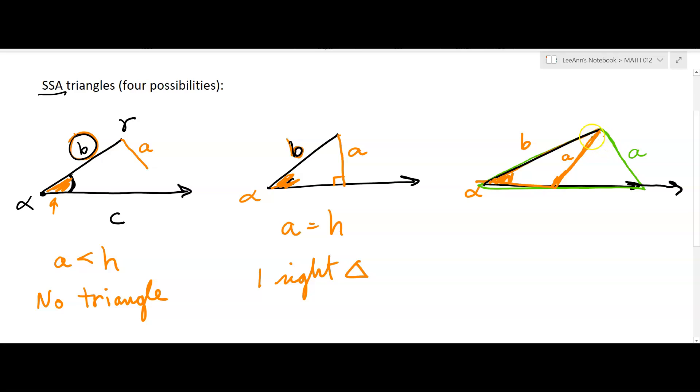And you might be saying, but that angle is different than this angle. That's true, but we don't know that angle, so we don't know which one it is. So in this case, you get two possible triangles.